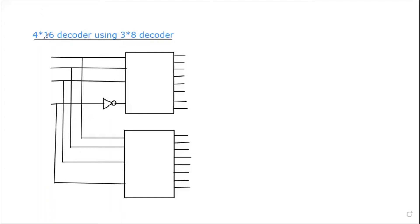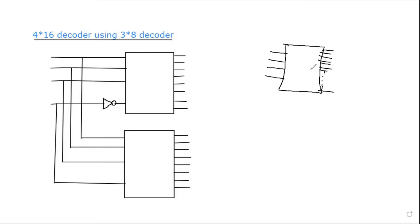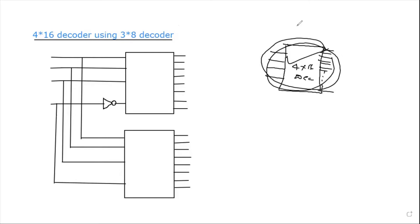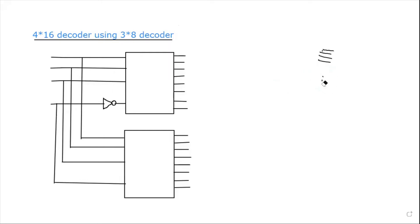The next important concept is designing a 4 by 16 decoder using 3 by 8 decoders. We will design a 4 by 16 decoder with the help of 3 by 8 decoders. A 4 by 16 decoder has 4 inputs and 16 outputs.